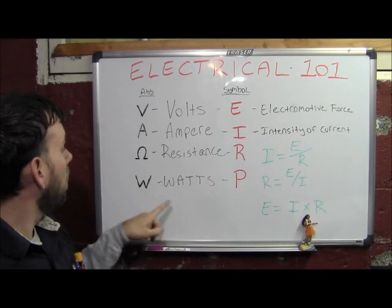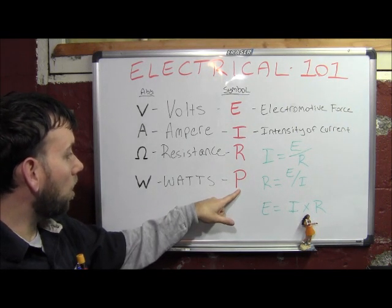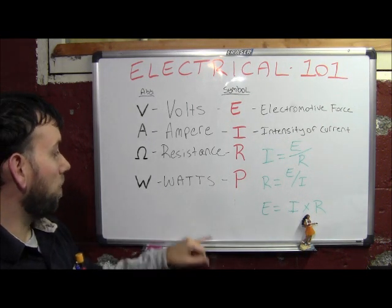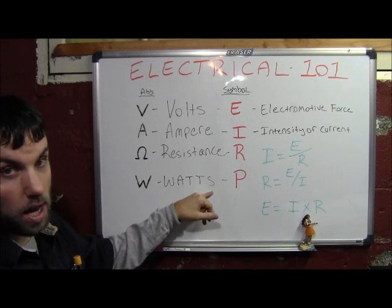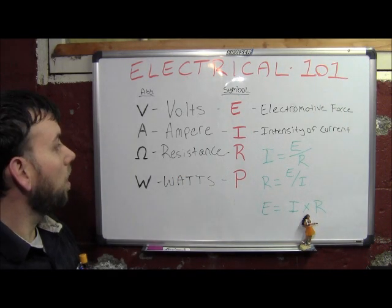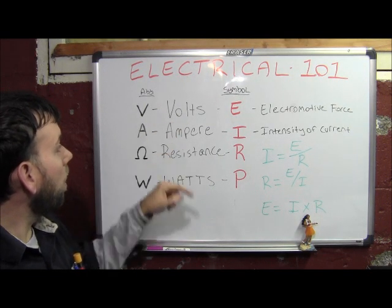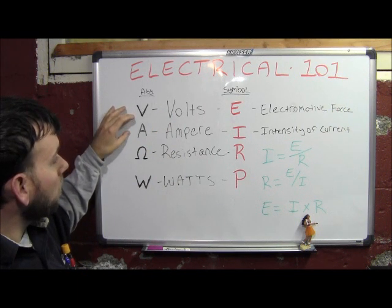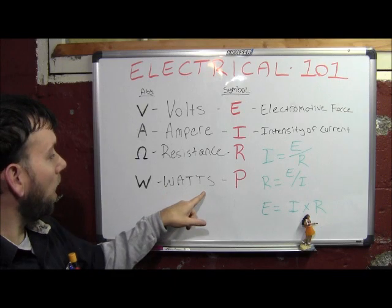Watts is your electrical power, represented by the symbol P and abbreviated W. This is what you get charged for on your electrical meter through your power company, and it's what most things are measured by. For example, a microwave might be 700 watts, 1000 watts, or 1500 watts. To get wattage, you need to know at least two of the other electrical values — volts and amps, amps and resistance, or volts and resistance — and from those you can calculate your total power.